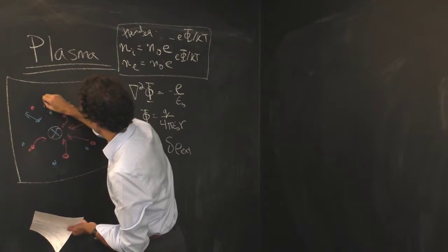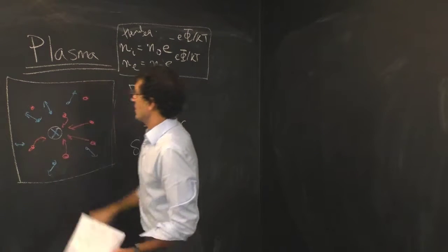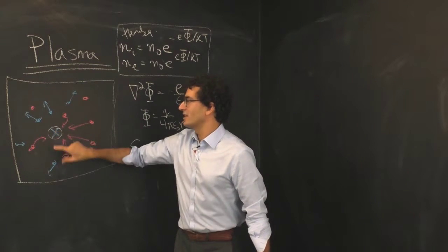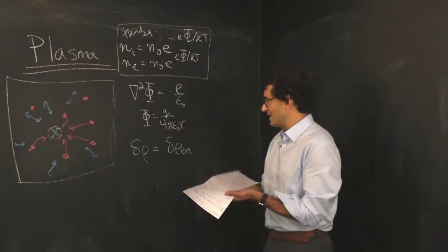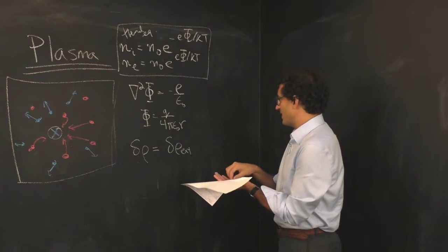The electrons are like, oh no, here's another electron, there goes the neighborhood, right? So they go away. The effect of this test charge is to have the plasma rearrange itself, and we can actually write down the effect of that.